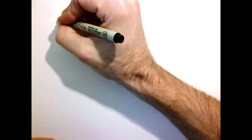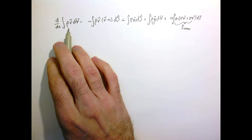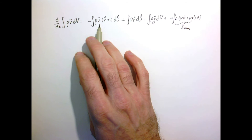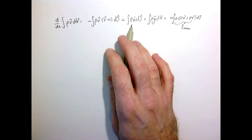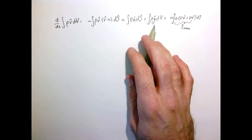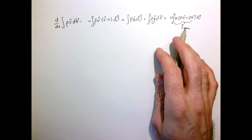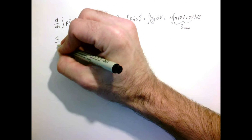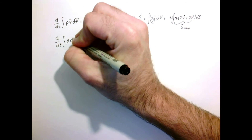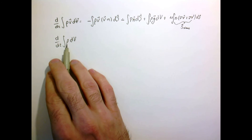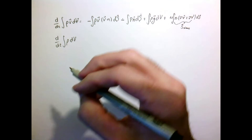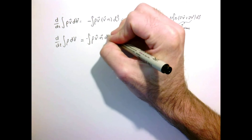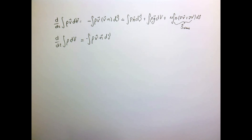So our final result is: the momentum inside a fixed control volume can change with time if there's an imbalance in the flux of momentum coming in or out, a net pressure force, a net gravity force, or net viscous stresses. This must be coupled with conservation of mass, whose integral form states that the mass inside the control volume can change with time if there's a net flux of matter coming in and out of the box.